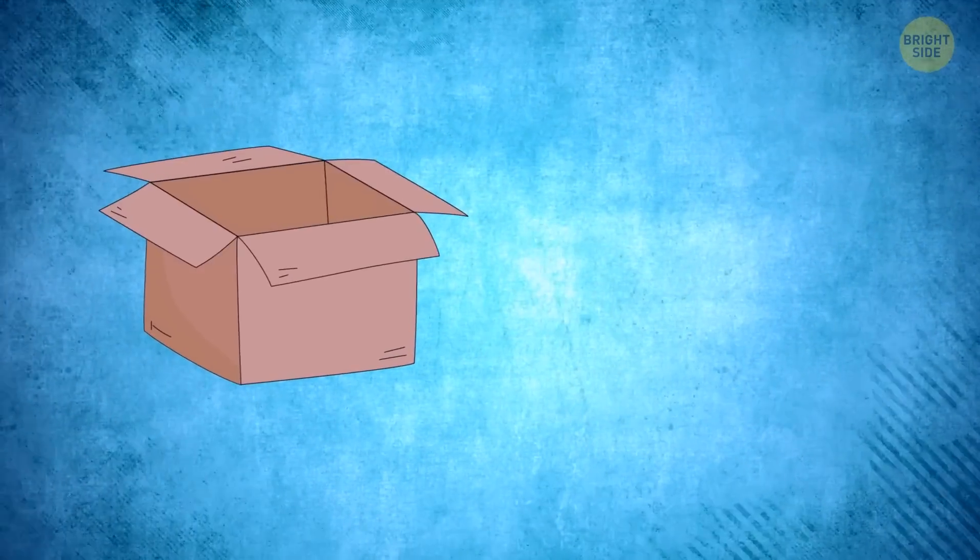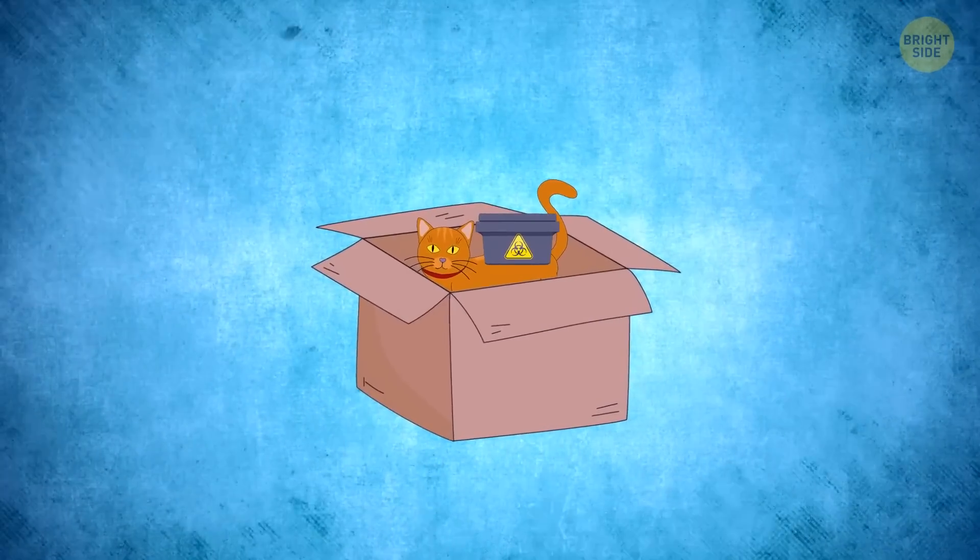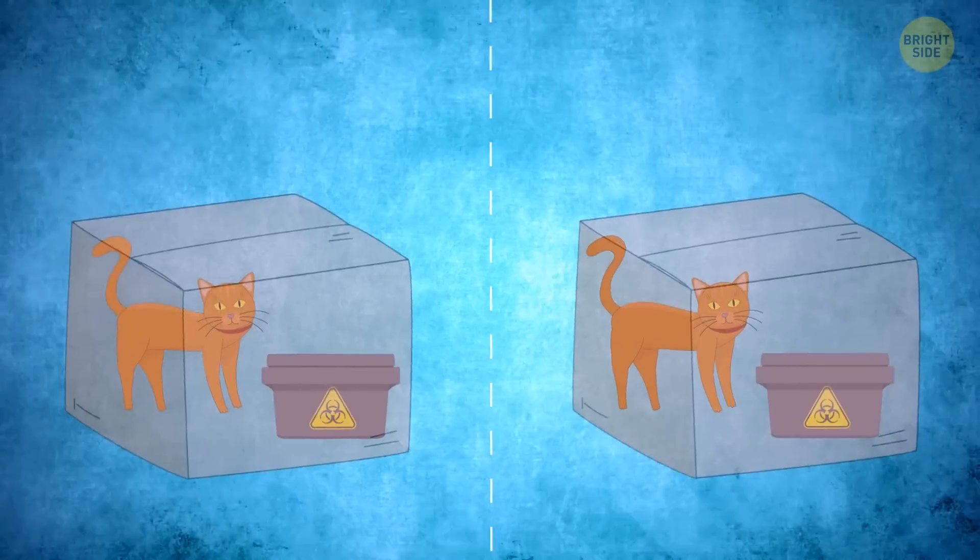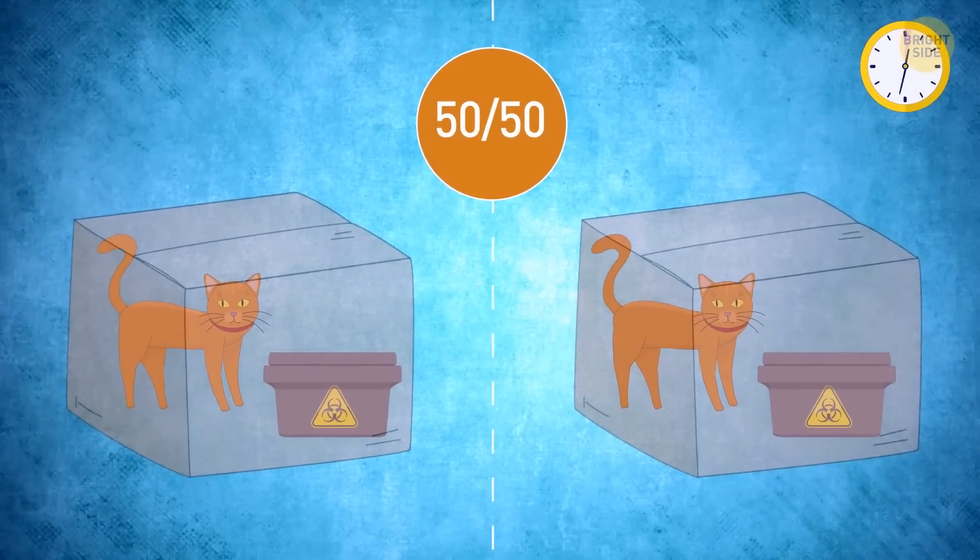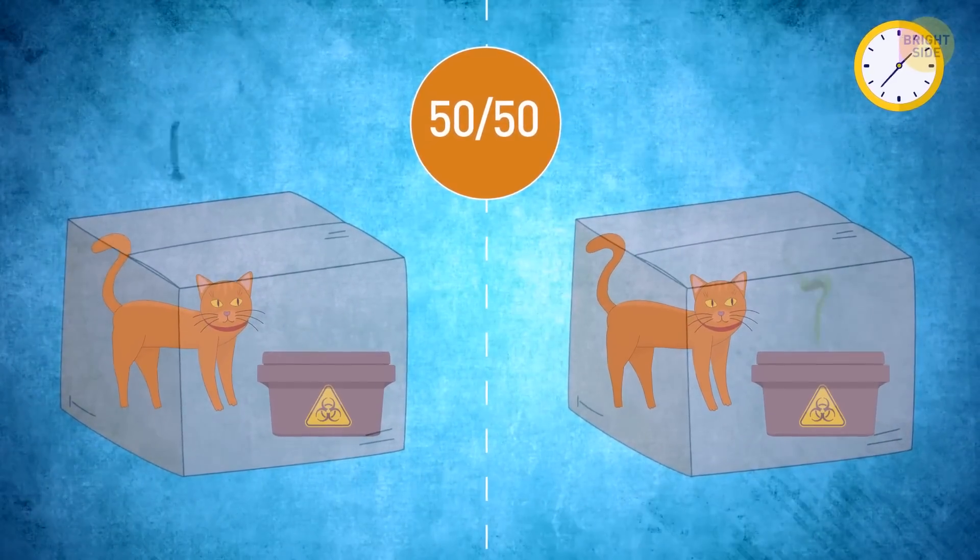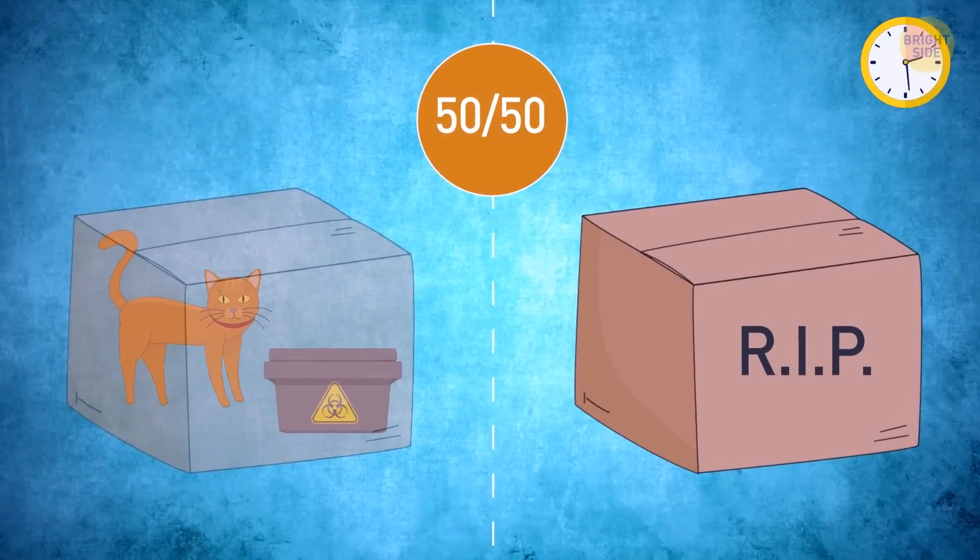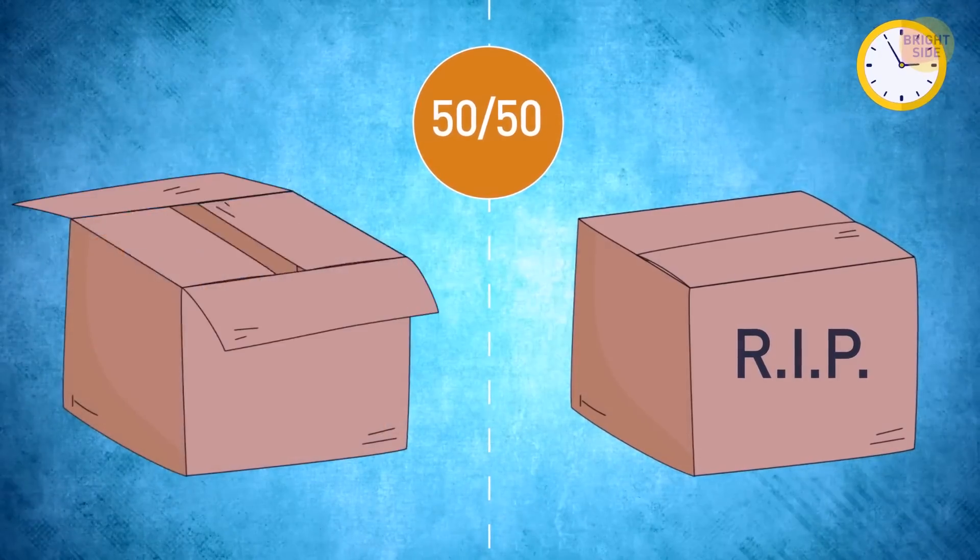So what was the point of the experiment? First of all, we have a box and a cat. In the box, there's a container with toxic gas and a special mechanism. Every hour, there's a 50% chance that this mechanism will either open the gas container or not. If it happens, the poisonous gas will be released and the poor cat won't make it. If this doesn't happen, the cat will remain alive and well.